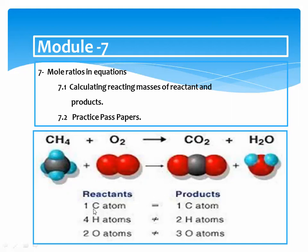The reactants contain 1 carbon atom, 4 hydrogen atoms, and 2 oxygen atoms. In the products: 1 carbon, 2 hydrogen, and 3 oxygen atoms. Observe the diagram and answer: is the number of atoms on the left-hand side (reactants) equal to the number on the right-hand side (products)? Are these equal or not?